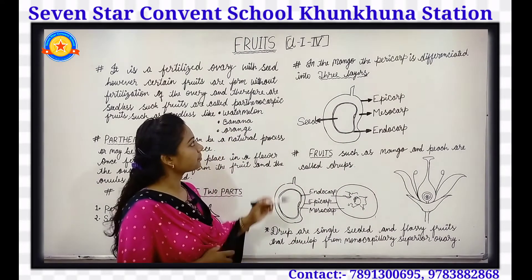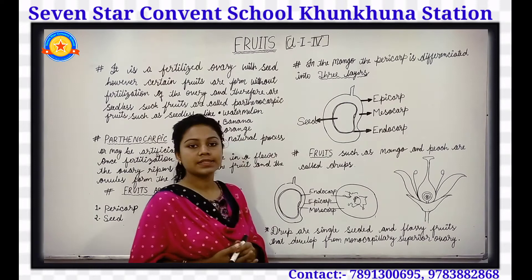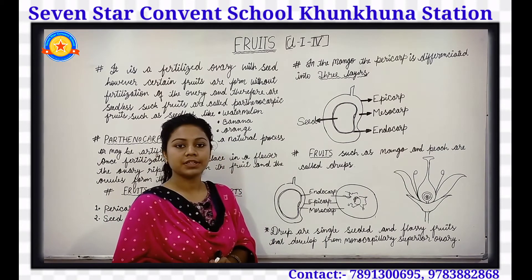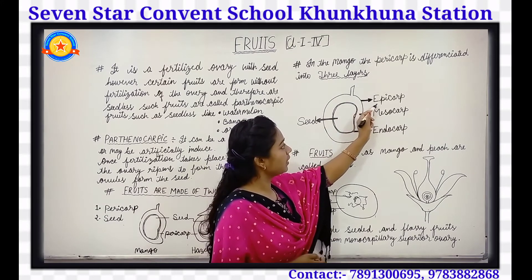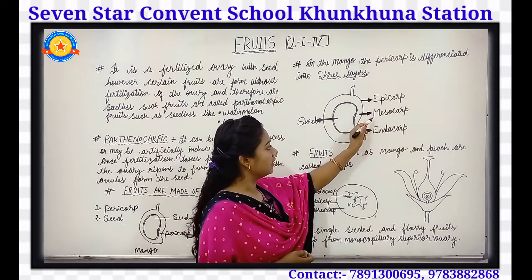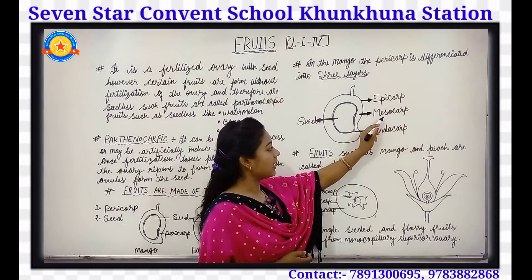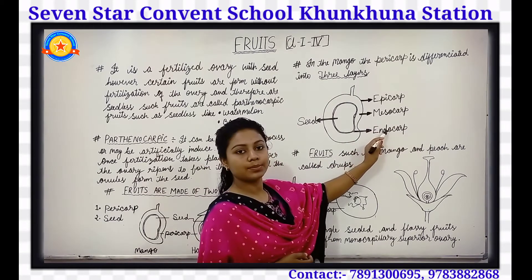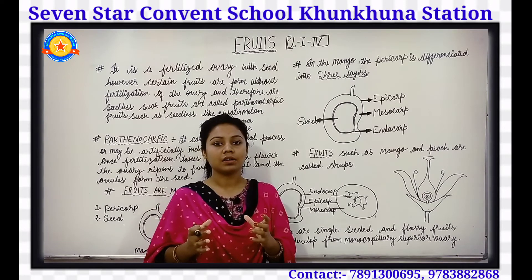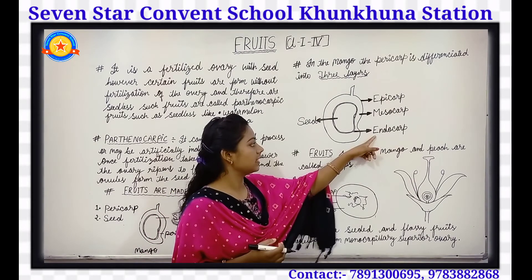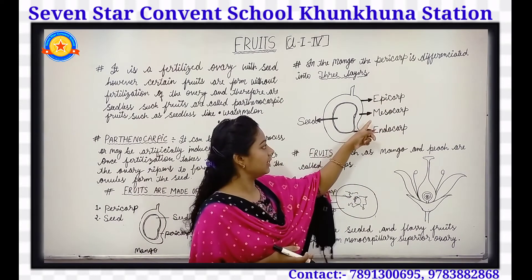In the mango, the pericarp is differentiated into three layers. The first one is the epicarp. Then the mesocarp, and the endocarp. The epicarp is the outer layer, the mesocarp is the middle layer, and the endocarp is the innermost layer which surrounds the seed. So endocarp is the innermost layer, epicarp is the outermost layer, and mesocarp is the middle layer.